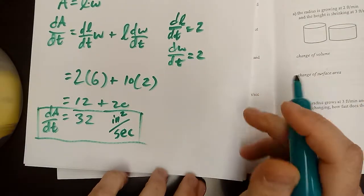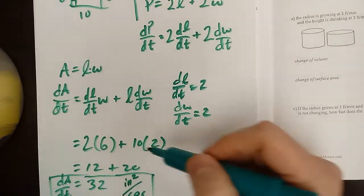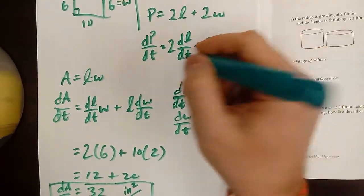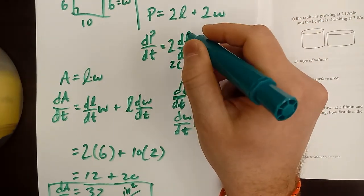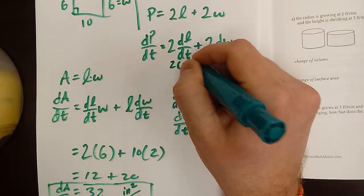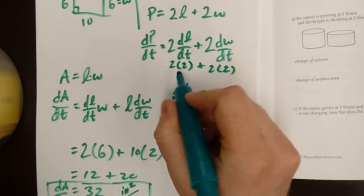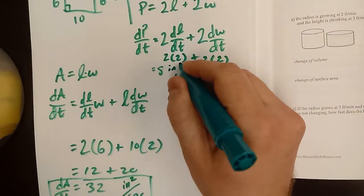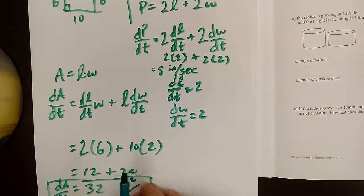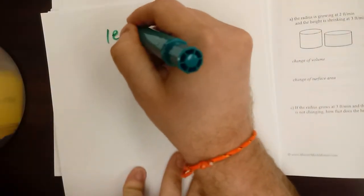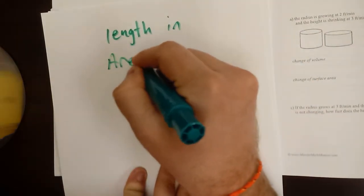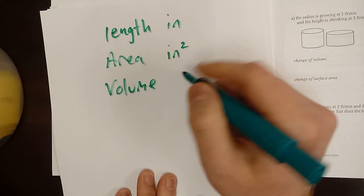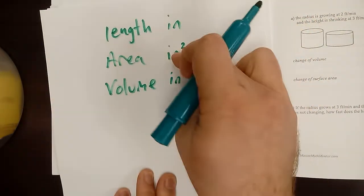Similarly, we can plug these numbers into our perimeter formula: dP/dT = 2(dL/dT) + 2(dW/dT) = 2(2) + 2(2) = 4 + 4 = 8 inches per second. To summarize units: length is just inches, area adds another dimension so it's inches squared, and volume is inches cubed. If it was miles instead of inches, it would be miles, miles squared, miles cubed, and so on.